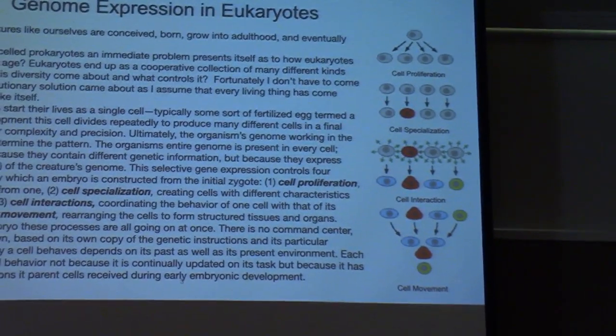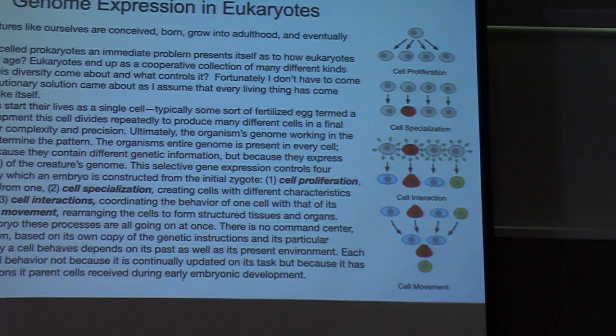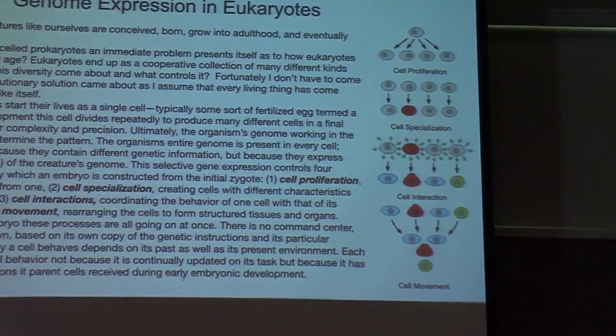The organism's entire genome is present in every cell. The cells differ not because they contain different genetic information but because they express different pieces — that is, genes — of the creature's genome. This selective gene expression controls four essential processes by which an embryo is constructed from the initial zygote: cell proliferation producing many cells from one; cell specialization creating cells with different characteristics; cell interactions coordinating the behavior of one cell with its neighbors; and cell movement rearranging cells to form structured tissues and organs.